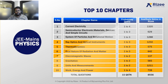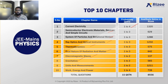In Physics, current electricity has a probability of 1 to 4 questions coming from that chapter, followed by semiconductors, system of particles, ray optics, thermodynamics, dual nature of radiation and matter, electromagnetic waves, gravitation, units and measurements, and work energy and power. All these 10 chapters together contribute 10 to 15 questions.